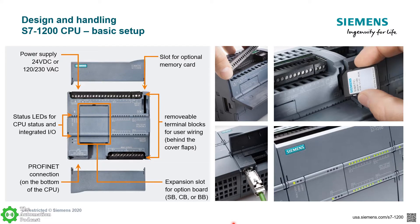The basic design of the 1200 is a typical brick-style PLC. You have integrated digital inputs and outputs as well as analog IO. On top of the CPU you'll see the power supply connection — either 24 volt DC or AC voltage. The terminal blocks on the top and bottom are removable and interchangeable with push-in terminals, which is useful for applications with a lot of vibration where screw terminals may not be ideal.